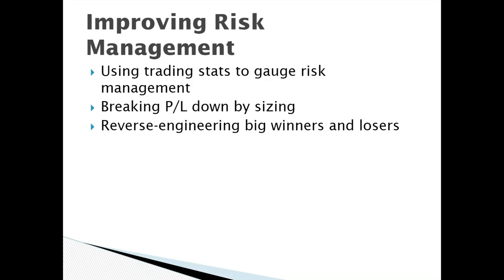We want to break down our trading to see if our average win size is greater than our average loss size. It's not uncommon to see someone with a 50-50 hit rate who still loses money because average losses are greater than average wins. There are two ways to improve risk management: one is being better at setting and utilizing stops to keep losses from getting out of hand. But there's another aspect I call opportunity management.